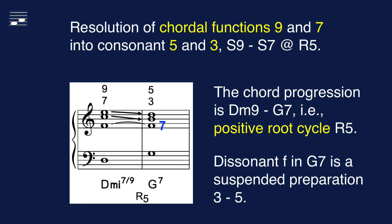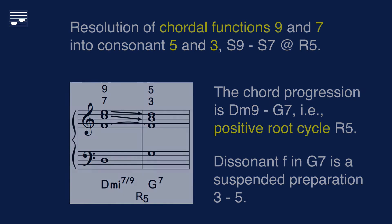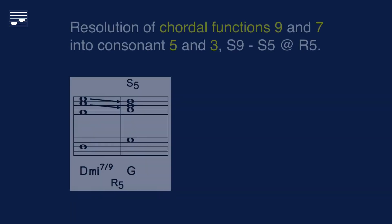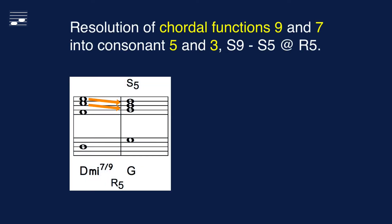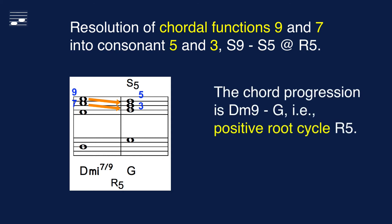The dissonant 7, the F in the G7 chord, is prepared as a suspended note. Alternatively, we may resolve the 9th chord into a triad, here G major. The root cycle again is R5. The voice leading yields closing contrary motion between the upper and bass parts. Listen to both resolution options.